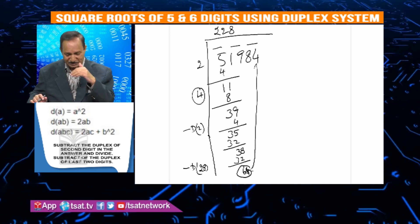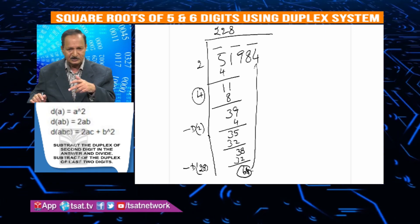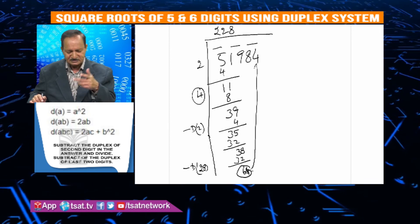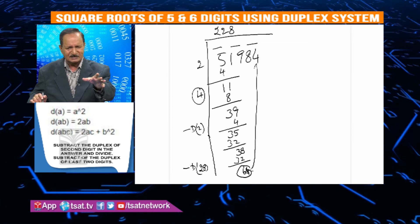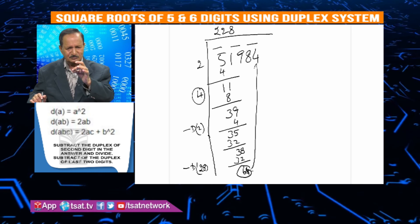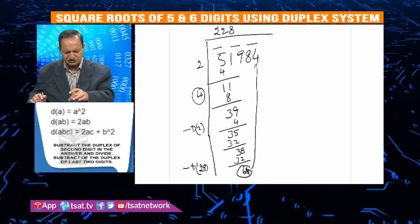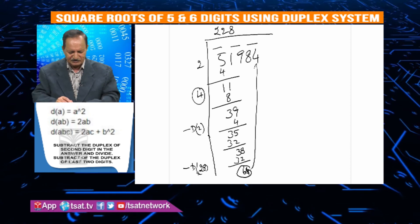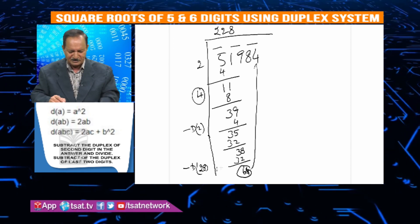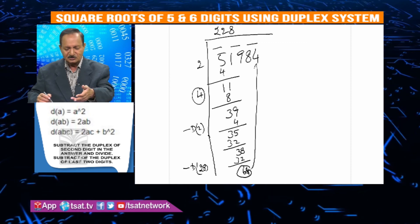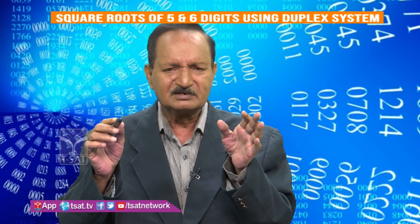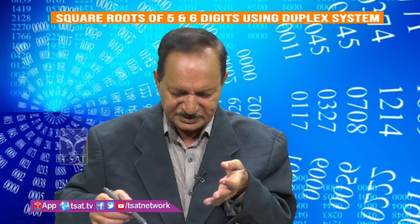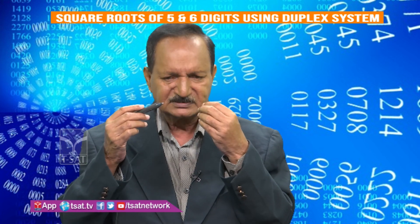We have to confirm whether it is right or wrong. Here, in the last two numbers 32 and 8, subtract the duplex. The duplex of the last two numbers is 2 times 3 times 8, which is 48. Wait, let me recalculate - the duplex is 64. So if we have 64, our answer is right. It will be like this for 5 and 6 digits.